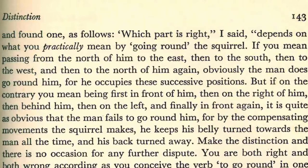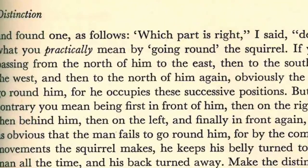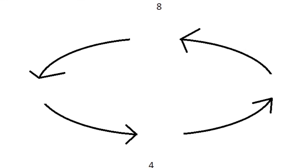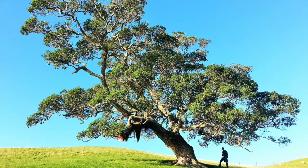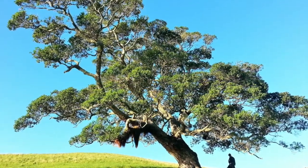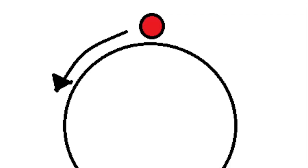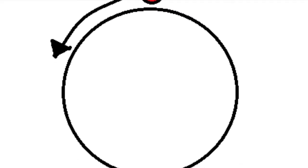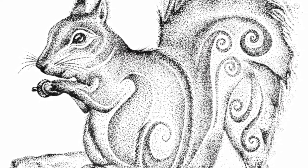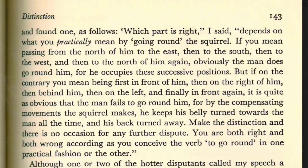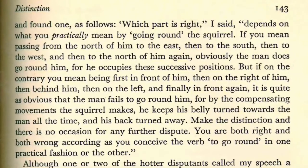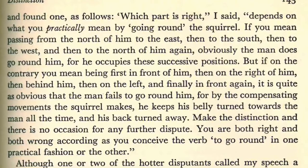Mindful of the scholastic adage that whenever you meet a contradiction you must make a distinction, I immediately sought and found one as follows. Which part is right, I said, depends on what you practically mean by going round the squirrel. If you mean passing from the north of him to the east, then to the south, then to the west, and then to the north of him again, obviously the man does go round the squirrel — for he occupies these successive positions. But if, on the contrary, you mean being first in front of him, then on the right of him, then behind him, then on the left, and finally in front again, it is quite as obvious that the man fails to go round him. For, by the compensating movements the squirrel makes, he keeps his belly turned towards the man all the time, and his back turned away. Make the distinction, and there is no occasion for any further dispute. You are both right and both wrong, according as you conceive the verb to go round in one practical fashion or the other.